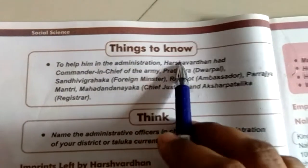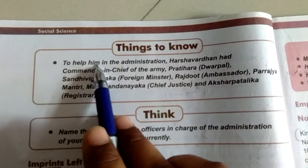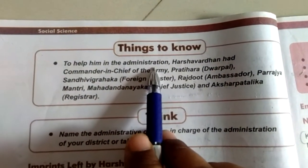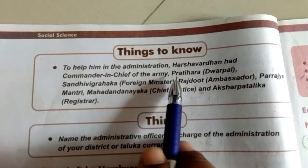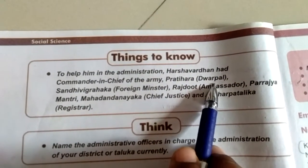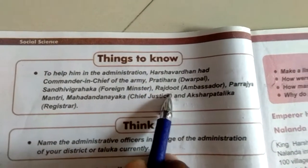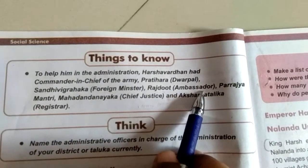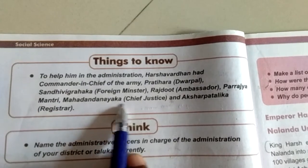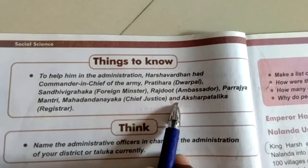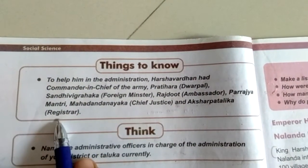To help him in the administration, Harshvardhan had a commander-in-chief of the army, a Pratihar (meaning doorkeeper/guard), a Sandhi Vigraha (meaning Foreign Minister), a Rajdut (meaning Ambassador), a Mahadhand Nayak (meaning Chief Justice), and an Akshar Patlik (meaning Registrar).